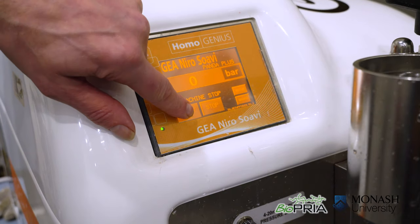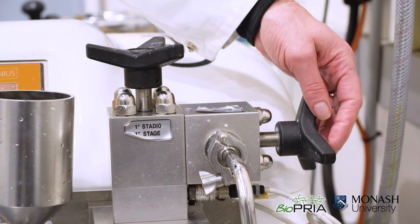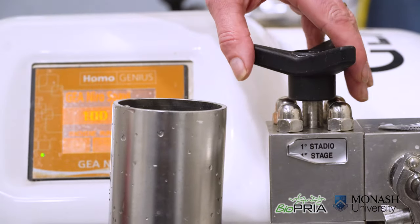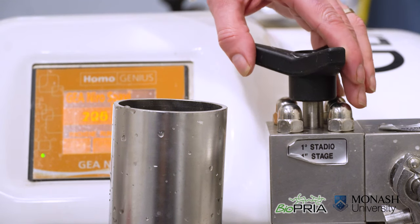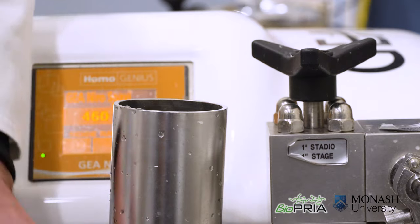We will slowly increase the pressure of the homogenizer. In the first stage we will increase the pressure to about 80 bar. In the second stage we will slowly increase the pressure to about 800 bar. Make sure that there is water flushing into the homogenizer.